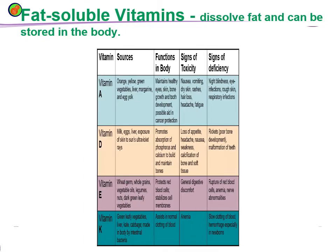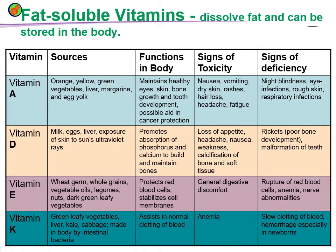This is the chart of fat-soluble vitamins. Vitamin A can be obtained from green vegetables. Its functions in the body include maintaining healthy eyes, healthy skin, and tooth development. Toxicity can cause vomiting, rashes, and fatigue. Deficiency causes night blindness, eye infections, and respiratory infections. The second fat-soluble vitamin is vitamin D.